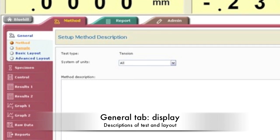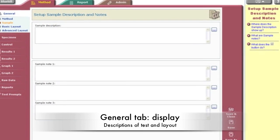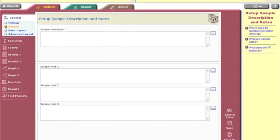The general tab is for display purposes. You can write descriptions about your method and sample and specify the layout of the program.